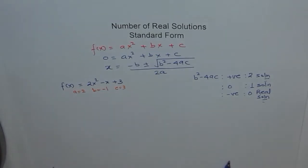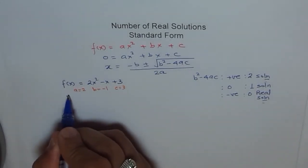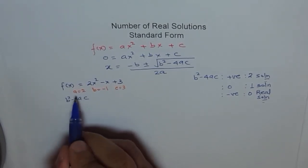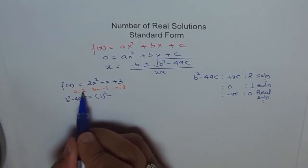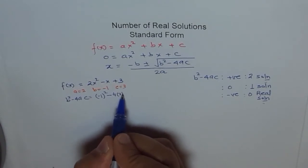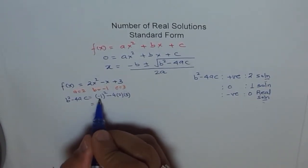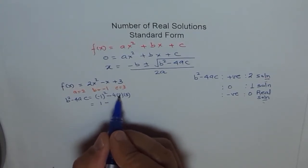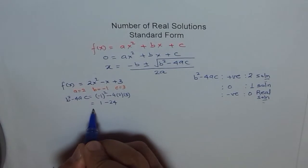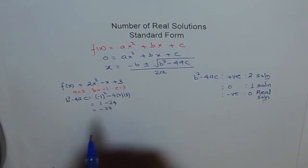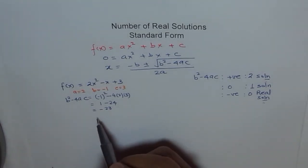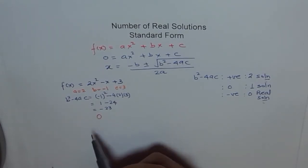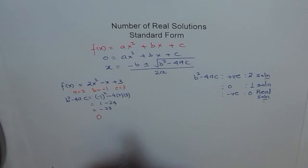Now we have all this. Now, what is b square minus 4ac? So what is b for us? minus 1 square minus 4ac. a is 2 and c is 3. So we get minus 1 square is 1 minus 4 times 2 is 8. 8 times 3 is 24. So we land up with minus 23. If b square minus 4ac is minus 23, then how many real solutions do we expect? None. Zero. This is the way to calculate b square minus 4ac.